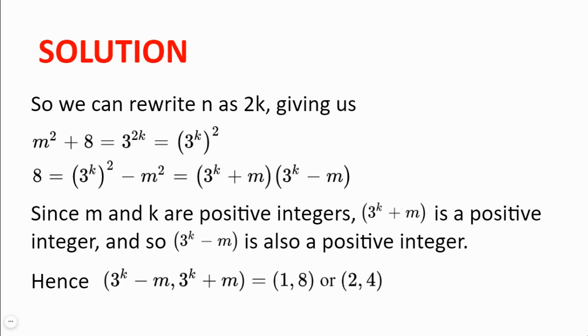Now, because m and k are positive integers, 3 to the power of k plus m is a positive integer, and because 8 is also positive, 3 to the power of k minus m is also positive, and it's also an integer since k and m are positive integers.